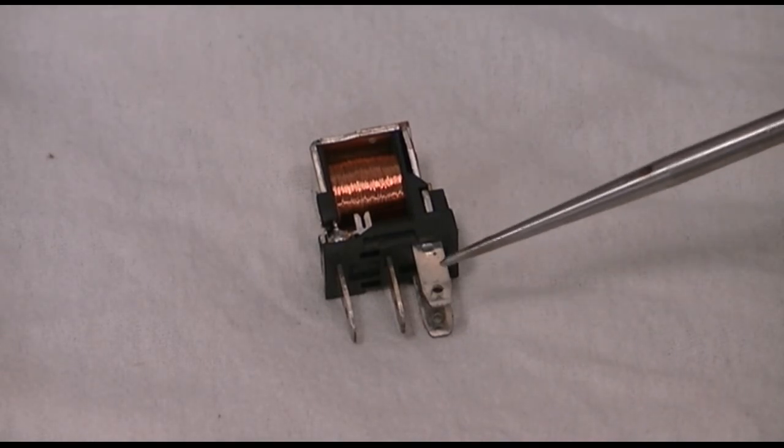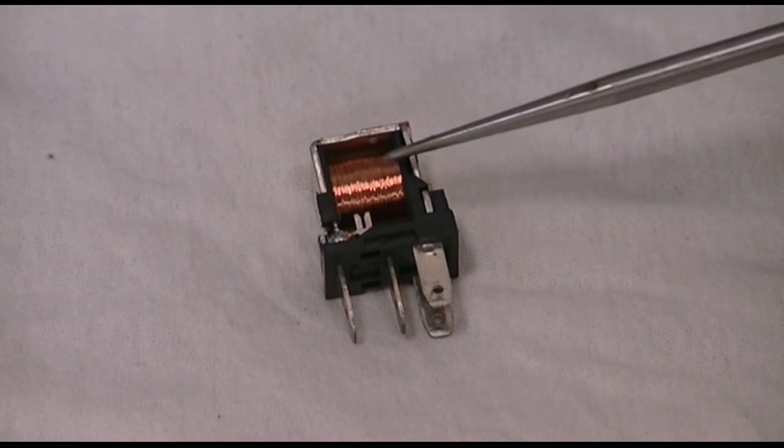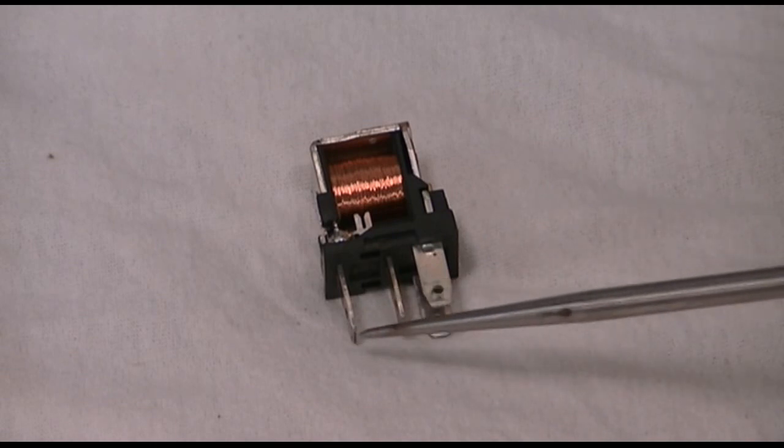You can use a low current switch to activate this coil, which creates an electromagnet and pulls this switch closed, connecting these two pins right here.